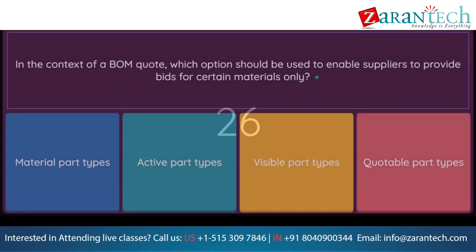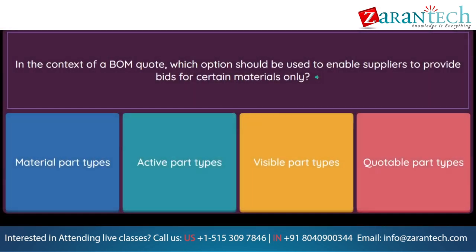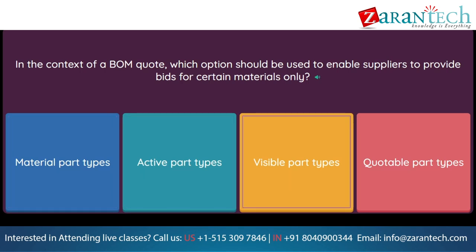Question: In the context of a BOM quote, which option should be used to enable suppliers to provide bids for certain materials only? Option 1: material part types. Option 2: active part types. Option 3: visible part types. Option 4: quotable part types.